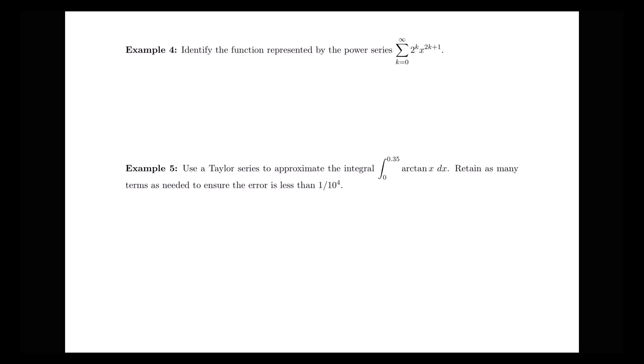In this video we're going to continue discussing applications of our Taylor series. For our first example, we want to identify the function represented by the power series: the sum from k equals 0 to infinity of 2 to the k times x to the 2k plus 1. We want to think about what power series this reminds us of, and we recall that 1 over 1 minus x equals the sum from k equals 0 to infinity of x to the k.